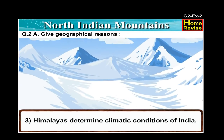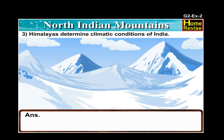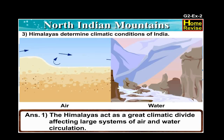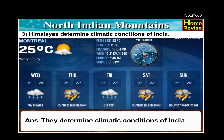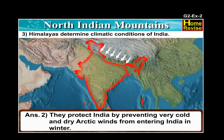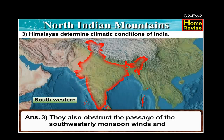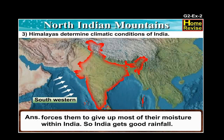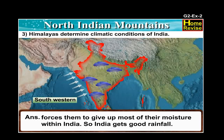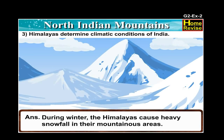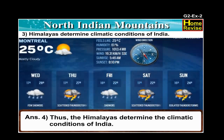Number three: Himalayas determine climatic conditions of India. The Himalayas act as a great climatic divide affecting large systems of air and water circulation. They protect India by preventing very cold and dry arctic winds from entering India in winter, keeping India free from sub-zero temperatures. They also obstruct the south-westerly monsoon winds and force them to give up most of their moisture within India, so India gets good rainfall. During winter, the Himalayas cause heavy snowfall in their mountainous areas.